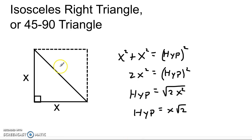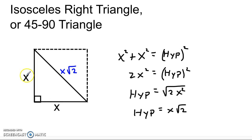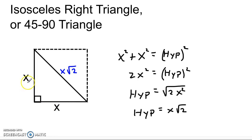This pattern is what we're going to use for all 45-90 right triangles. Whatever the leg of the triangle is, the hypotenuse is always that number times the square root of 2. So the pattern is: x, x, x√2.